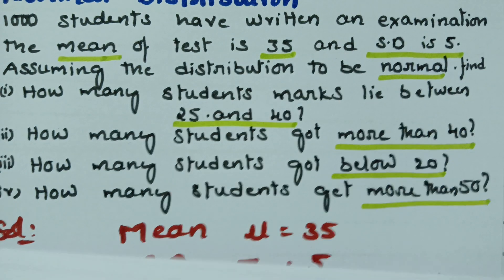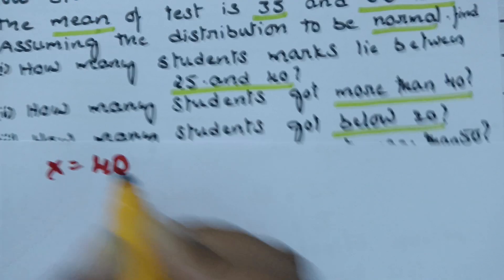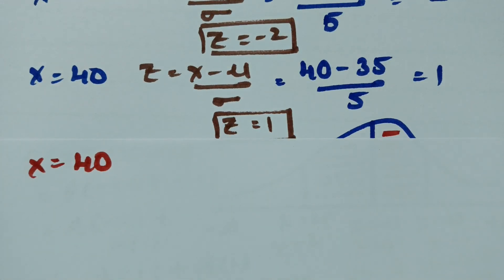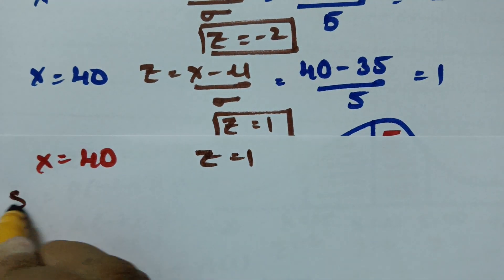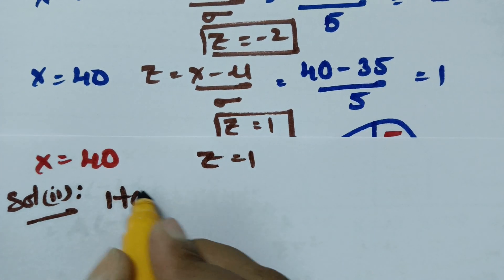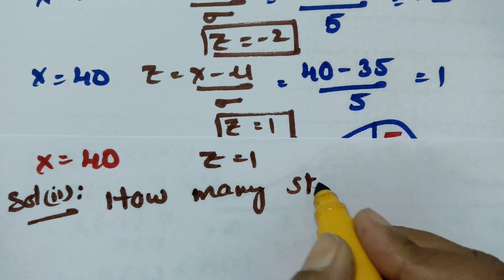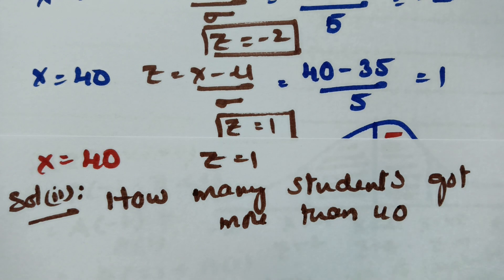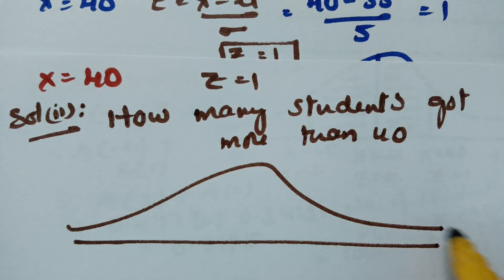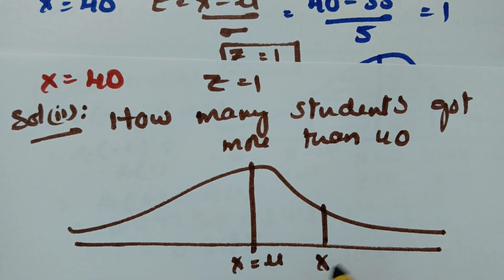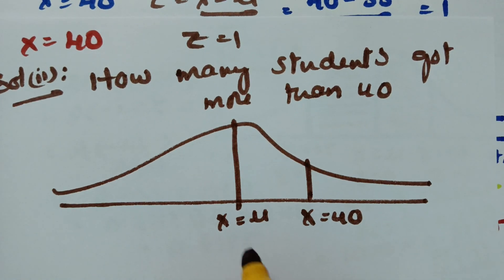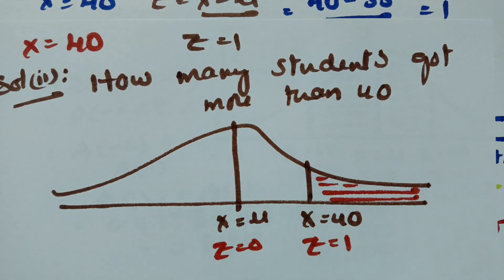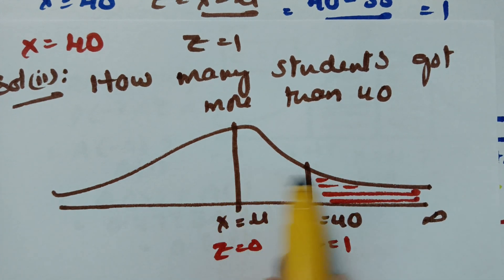For x = 40, the z value is 1. Solution 2: how many students got more than 40? The diagram shows z = 0 at the mean and z = 1 to the right. 'More than' means the area to the right of z = 1, extending toward infinity. It is easier to calculate 0.5 minus the area between z = 0 and z = 1.